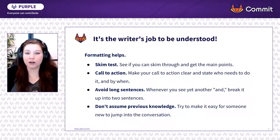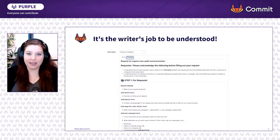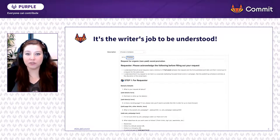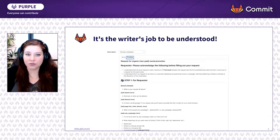When you're writing, try to avoid long sentences and don't assume previous knowledge. Make it easy for anyone to jump right into the conversation. This is an example of an issue template that our social media team created at GitLab. Here you see that they've used formatting like different header sizes and bold, created checkboxes, and even used emoticons to make it easy for people to understand what to do. I'd like to encourage you to use the issue's description to do something similar.